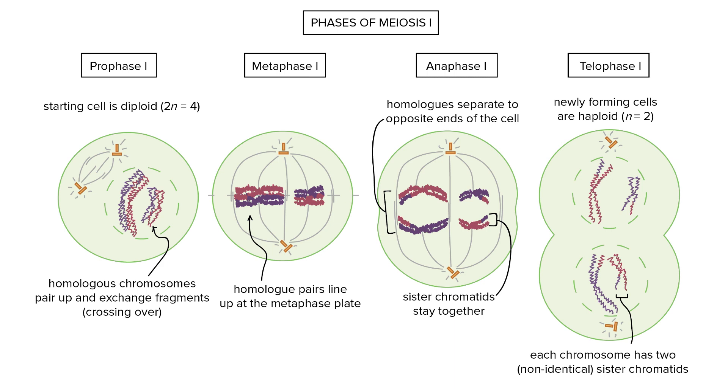So now that the tetrads are separated, in telophase one, cytokinesis is going to divide the cell, giving us two cells. The nucleus is going to regrow and now that we have two cells, each cell is going to contain one of the homologous chromosomes. So in humans, there would be 23 full chromosomes in each cell.